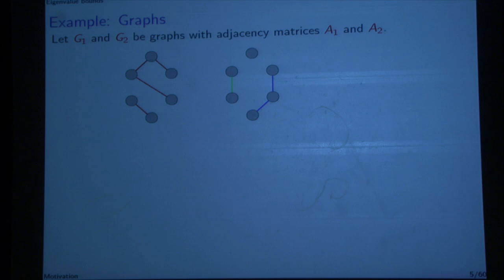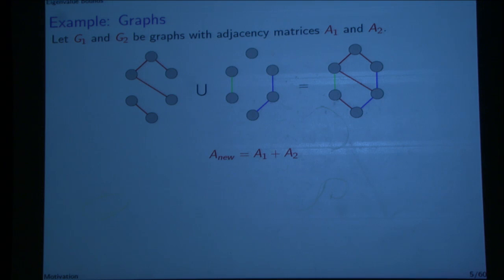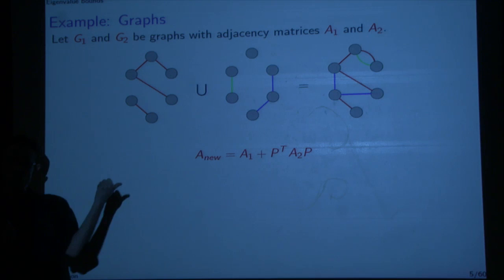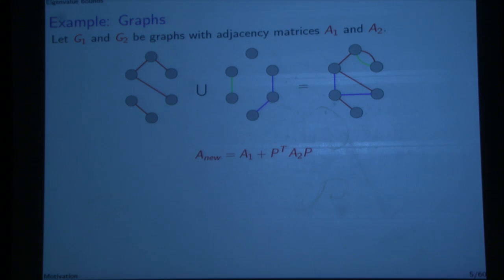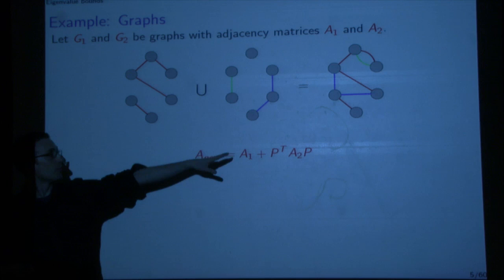So one example: if G1 and G2 are graphs with adjacency matrices A1 and A2, then I can take the union of these two graphs — that just puts the edges in where the edges weren't — and what happens to the adjacency matrices is you just add them together. On the other hand, I could have permuted the vertices and then done a union. That would have been a different addition of adjacency matrices: the first one plus some permutation matrix conjugating in the second one.